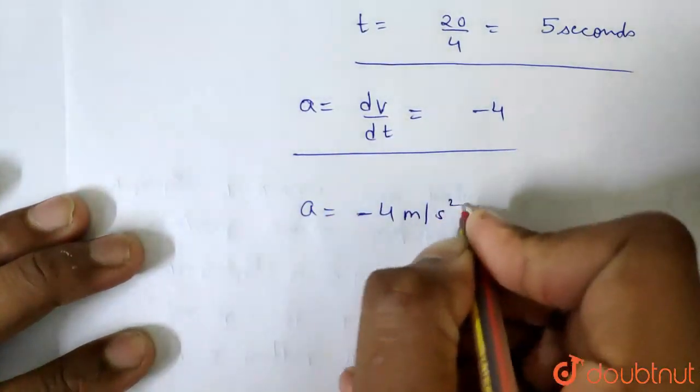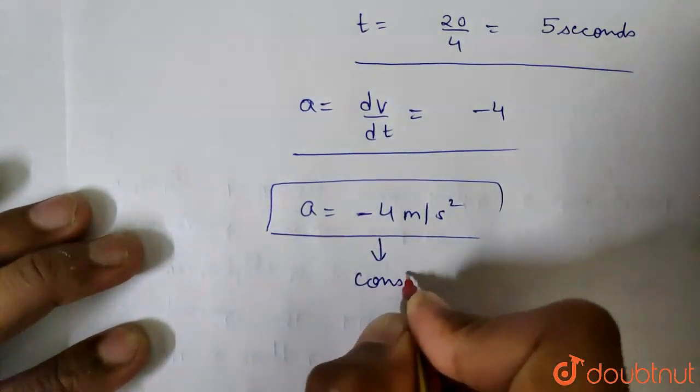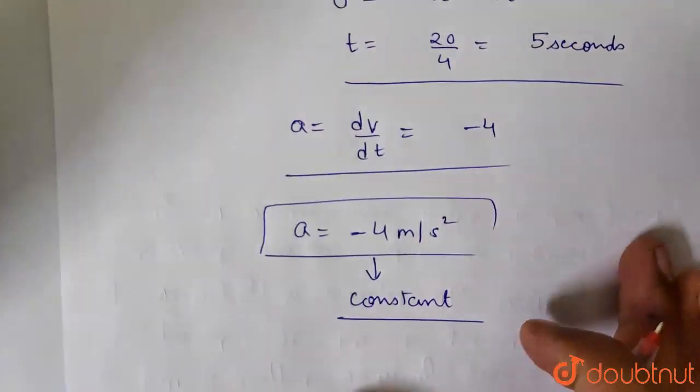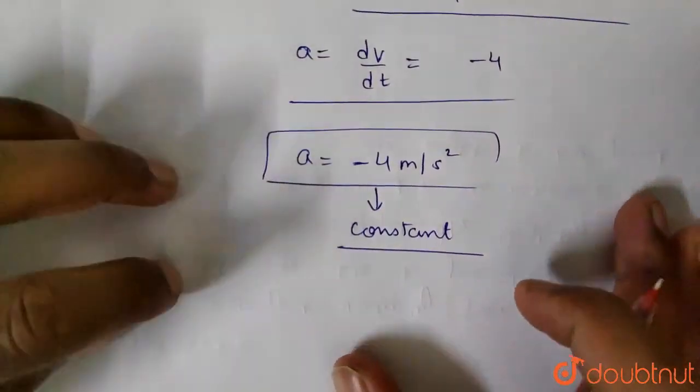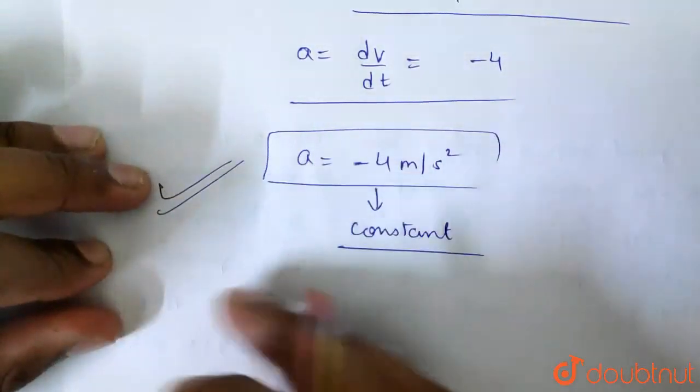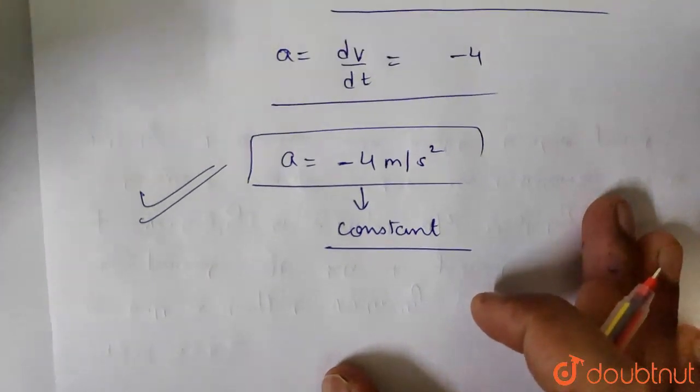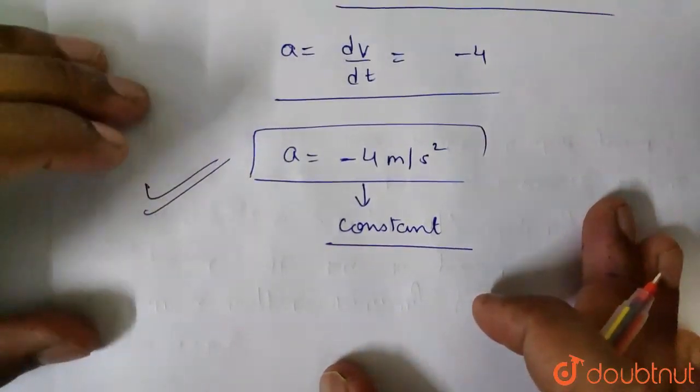What does acceleration mean? Constant means independent of time. So at any time, the acceleration is -4 meters per second squared. Even if the velocity is 0, it doesn't matter. The acceleration is constant in this condition. It will be -4 meters per second squared.